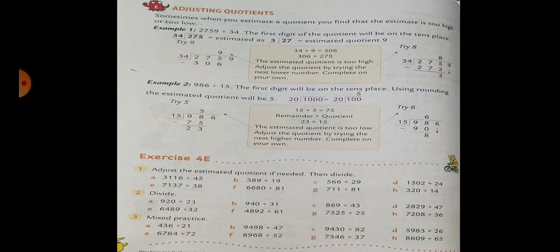34 multiplied by 9 is 306. 306 is bigger than 275, so we have to try the next number lower as a quotient. Try 8.